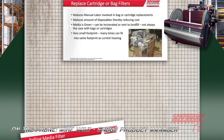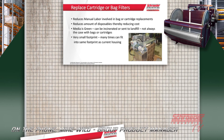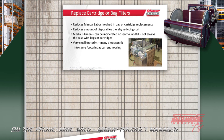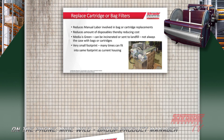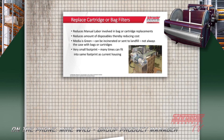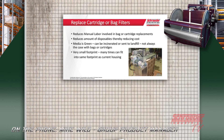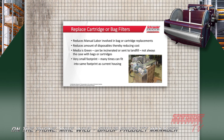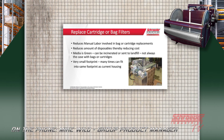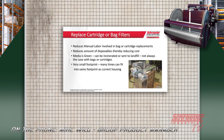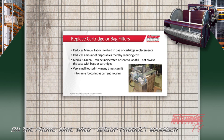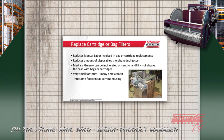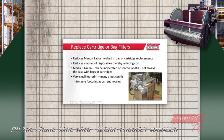Another good application is replacing cartridge or bag filters. If your customer has multiple cartridges or bag filters, they're spending a lot of time and manual labor removing those bags and cartridges. The rolling media filter can be a good replacement to reduce that manual labor and also reduce the amount of disposables they're currently paying for. It also has a very small footprint — it could go into the same area as the bags or cartridges already. The media is also green: it can be incinerated or sent to the landfill, which isn't always the case with bags or cartridges.